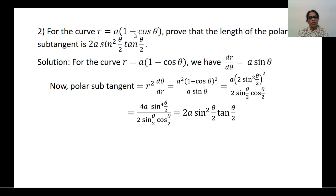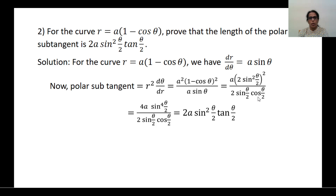Next problem: For the curve R = A(1 − cosθ), prove that the length of the polar subtangent is 2A sin²(θ/2) · tan(θ/2). Differentiate R with respect to θ: dR/dθ = A sinθ. The formula for polar subtangent is R² · dθ/dR. R = A(1 − cosθ), so R² = A²(1 − cosθ)². Taking the reciprocal of dR/dθ gives 1/(A sinθ). Using 1 − cosθ = 2sin²(θ/2) and sinθ = 2sin(θ/2)cos(θ/2).